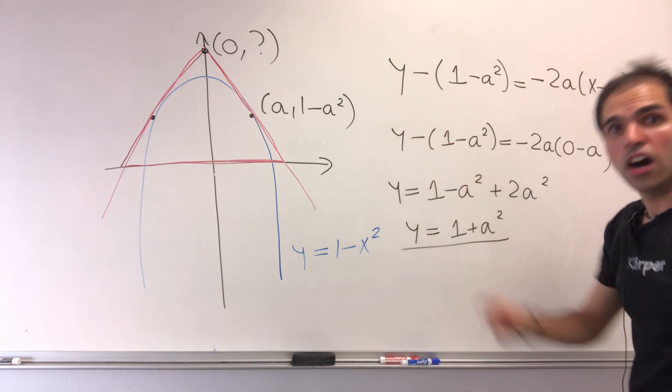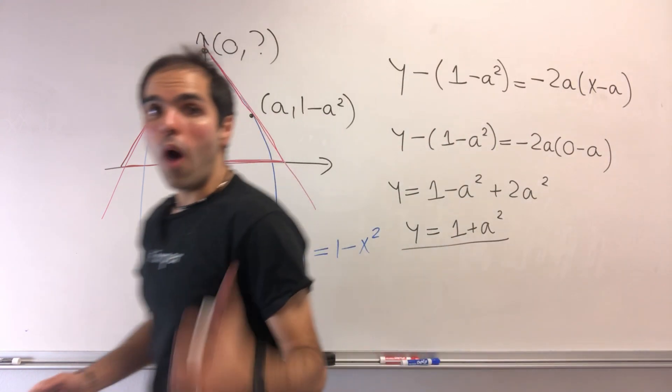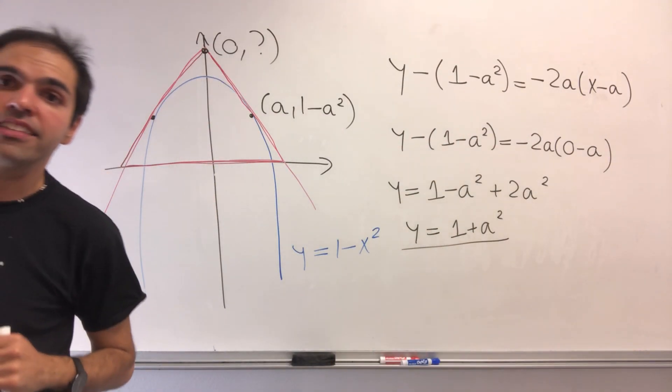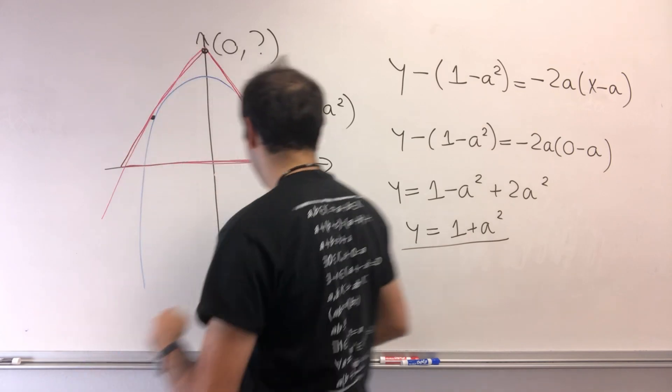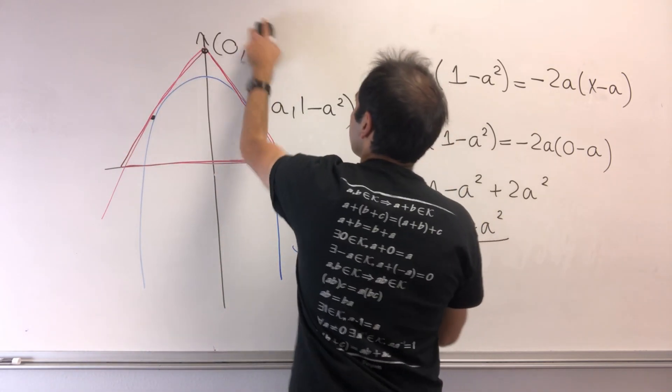So what we know is that the y-intercept is at (0, 1 plus a squared). That's one thing.